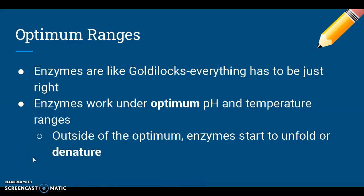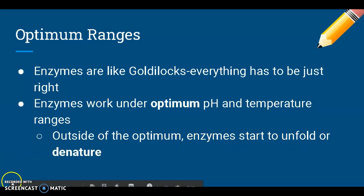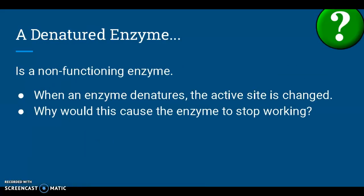Here's the thing about enzymes — enzymes are kind of like Goldilocks. Everything has to be just right: it can't be too hot, it can't be too cold, it's got to be just the right temperature. Enzymes work under what's called optimum — the best — pH and temperature ranges. If it's outside of the optimum, enzymes start to unfold, or denature, and lose that unique three-dimensional shape. A denatured enzyme is a non-functioning enzyme that can no longer do its job, because when an enzyme is denatured, the active site gets changed.